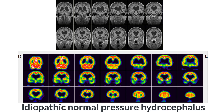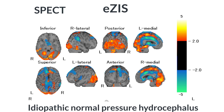An important treatable dementia is idiopathic normal pressure hydrocephalus. MRI shows dilated ventricles and high convexity tightness. Brain perfusion SPECT shows an apparent perfusion increase at the high convexity due to proximity of the cerebral cortex caused by narrowing of the cerebral sulci. EZI findings in idiopathic normal pressure hydrocephalus are characterized by a zone of decreased perfusion near the cingulate gyrus and a zone of increased perfusion above it.